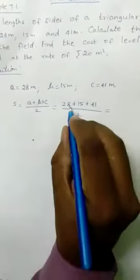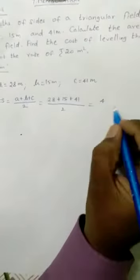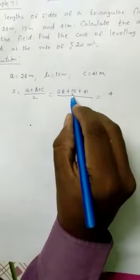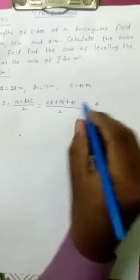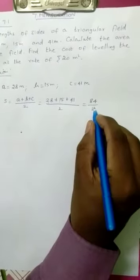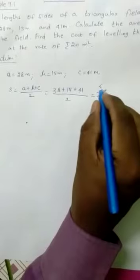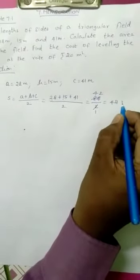Add these three values. 8 plus 5 is 13, 13 plus 1 is 14, remainder 1. 1 plus 4 is 5, 5 plus 1 is 6, 6 plus 2 is 8, divided by 2. Using the two times table: 2 times 4 is 8, 2 times 2 is 4. 42 meters. The semi-perimeter is 42 meters.